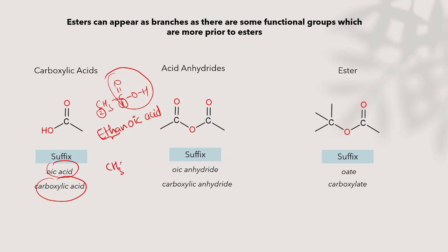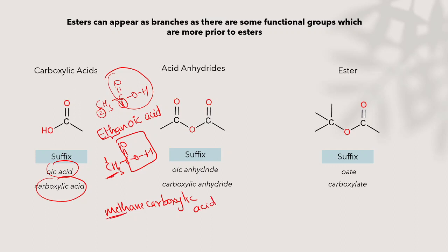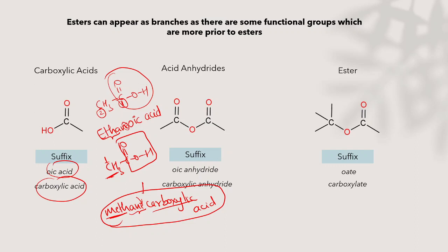I could have also used this carbon as number one and used the suffix 'carboxylic acid' for the whole principal functional group. Then I would have written 'methane carboxylic acid' — the main chain is only one carbon, so 'meth,' no unsaturation, add 'ane,' then 'carboxylic acid.' The 'e' is not dropped here because there is no vowel next to it. If two vowels come together in the name, you drop the last vowel. However, 'methane carboxylic acid' is not preferred for this — 'ethanoic acid' is.